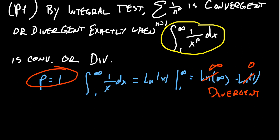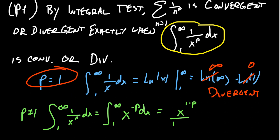If p is not 1, the integral from 1 to infinity of 1 over x to the p dx can be written as the integral from 1 to infinity of x to the negative p dx. By the power rule, we get x to the 1 minus p over 1 minus p, evaluated from 1 to infinity.